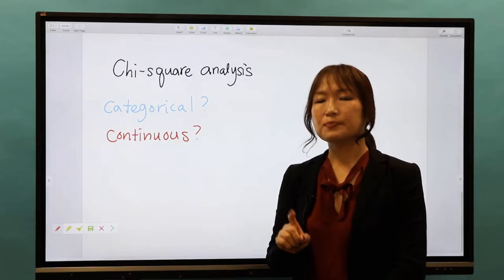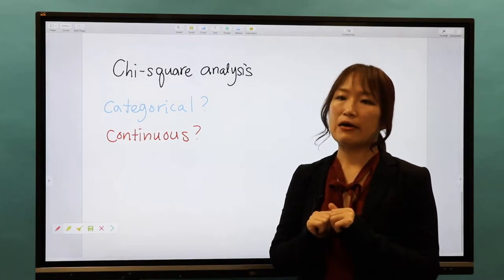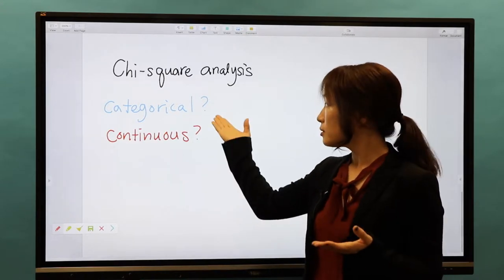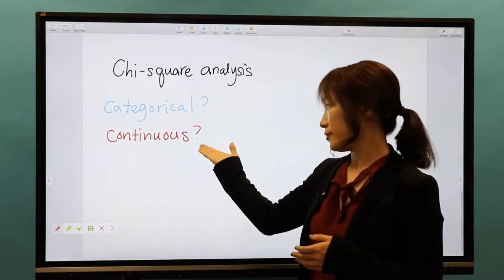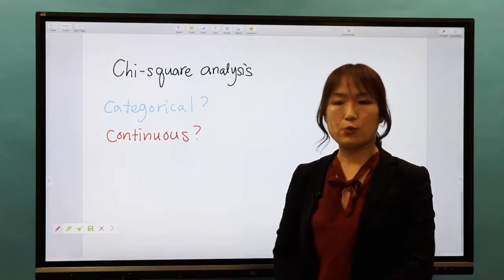First of all, if I have five groups, let's say, of different breeds of dogs, is this a categorical variable or continuous variable? Who can tell me the answer to this question and explain why?